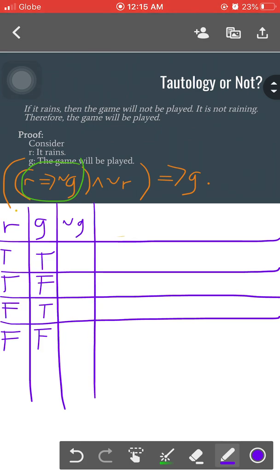Now that we have a column for not g, we can now have the column heading r implies not g.